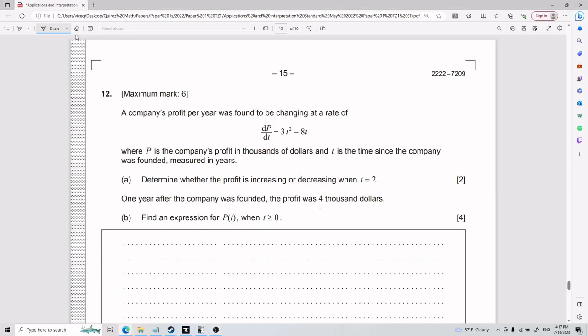Alright, and now for number 12, we have that a company's profit per year was found to be changing at a rate of dP/dt equals 3t squared minus 8t.